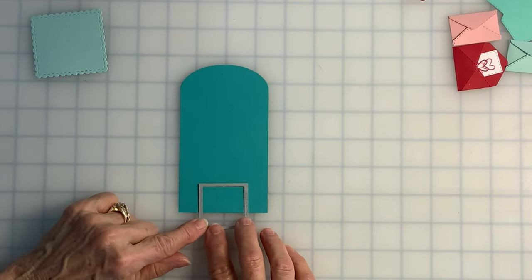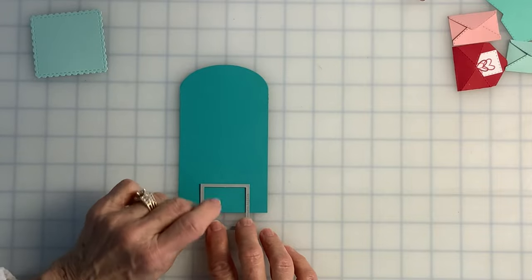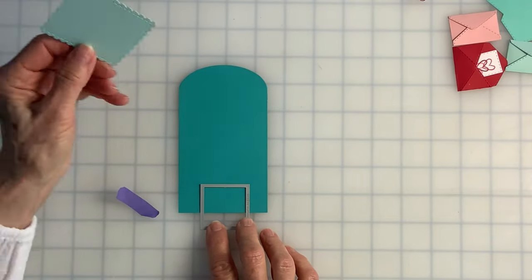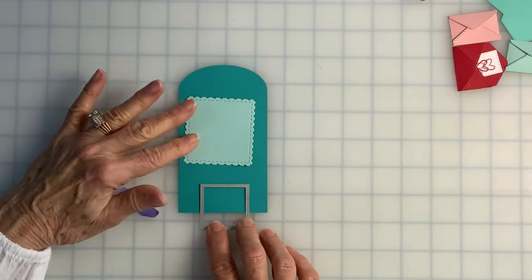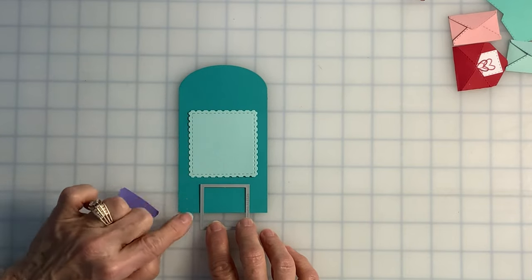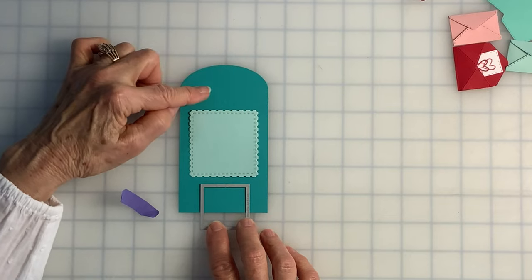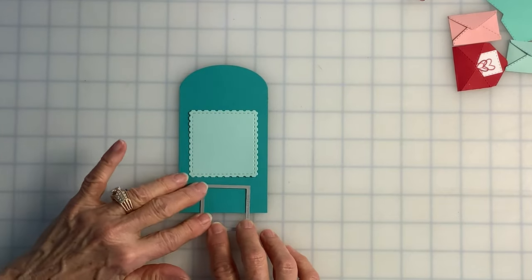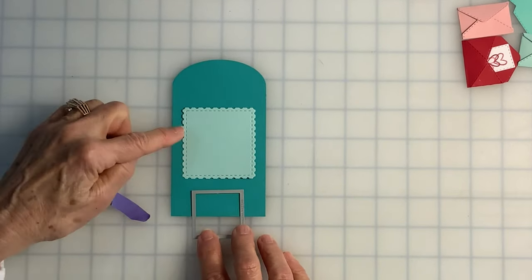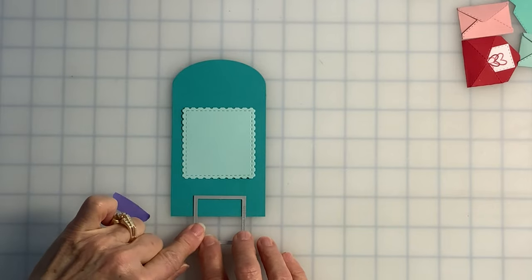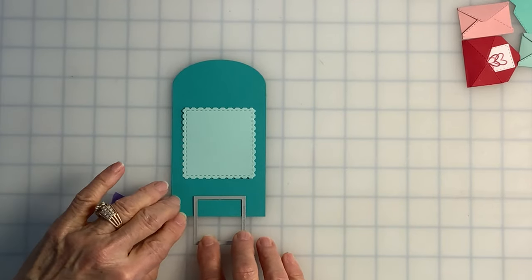Now before I decide for sure that I want this, I'm going to put my decorative panel on the front of my mailbox. I want to make sure that there's plenty of room for my decoration and the slit that will hold my envelopes, so if I need a little bit more space, I can slide the die down to make my legs a little bit shorter if I want to.